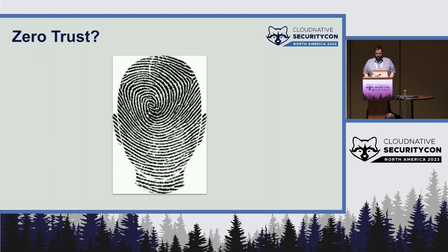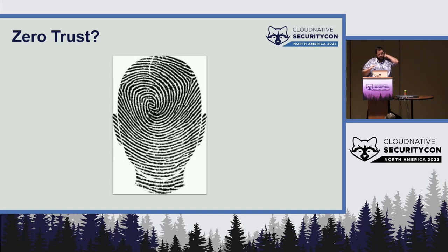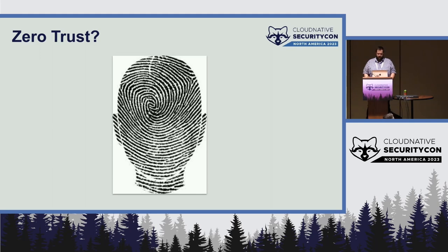How do we apply identities to ephemeral things — serverless functions, CI/CD build pipelines, or systems that expand and contract under elastic load? Solving this identity crisis is crucial. Identities have to be explicit. ACLs are based on identities, not just credentials or locations. And everything has an identity in a zero-trust system: people, machines, workloads — everything.